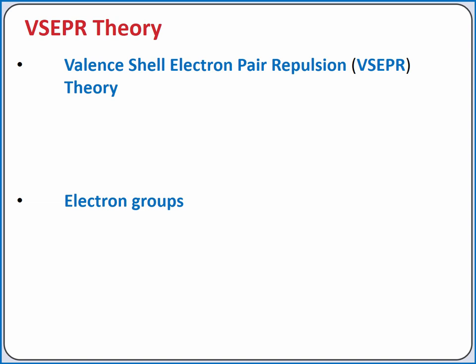Valence-shell electron pair repulsion theory, or VSEPR theory, is used to determine the three-dimensional shape of bonds and lone pairs around an interior atom. It's based on the idea that electron groups repel other electron groups. An electron group could be a lone pair, single bond, double bond, triple bond, or an unpaired electron. Each of these counts as one electron group. The three-dimensional shape that results positions these electron groups as far away from each other as geometrically possible.